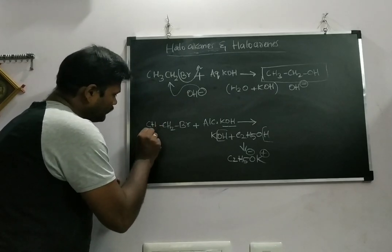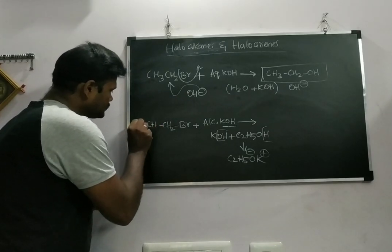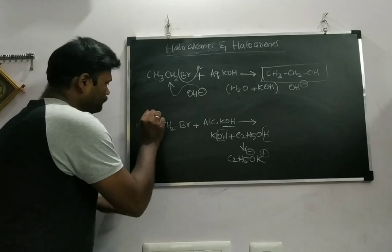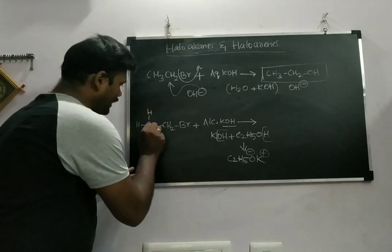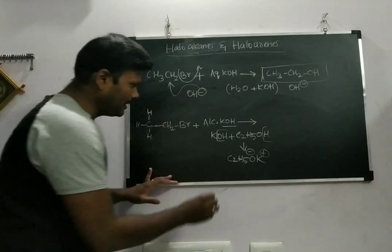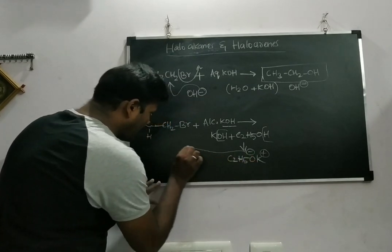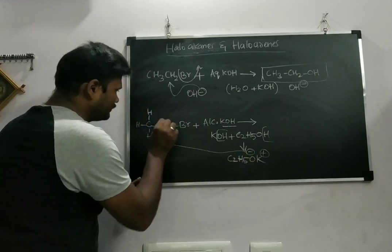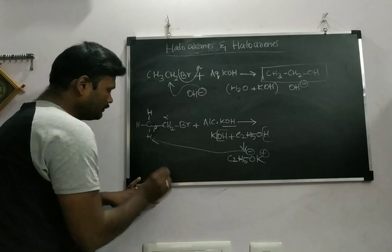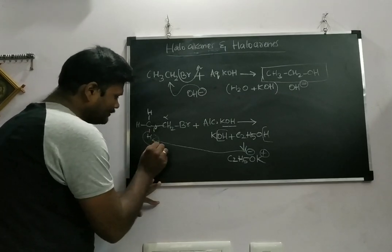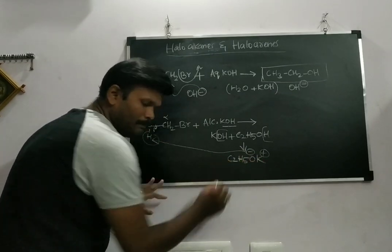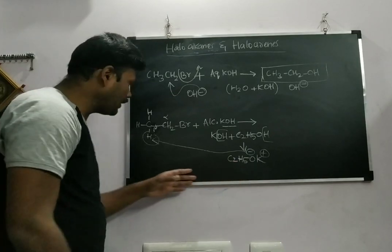I can write the reagent like this: H-H and one more H here. So I'm going to write my reactant like this. Here, this C2H5O- will come and attack the beta hydrogen. This is alpha, this is beta.